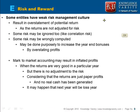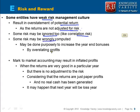Some entities or companies have a weak risk management culture, and it has to come from the top — the risk management culture must be promoted in the firm by the senior management. When companies have a weak risk management culture, it results in overestimation of the potential return, because the returns are not adjusted for the risk. If the returns were adjusted for the risk, the potential return expectation would be lower. Also, they may ignore some risks — for example, correlation risk — which can be wrongly computed, or done purposely because they want to increase their year-end bonus.